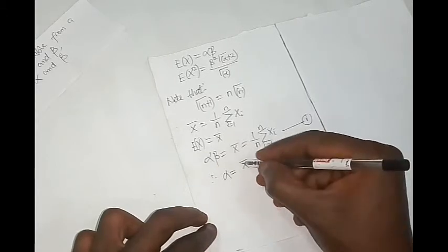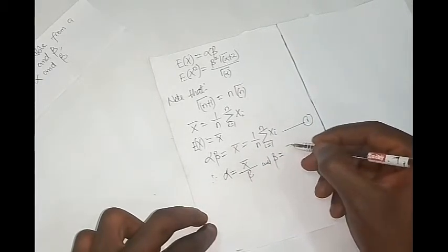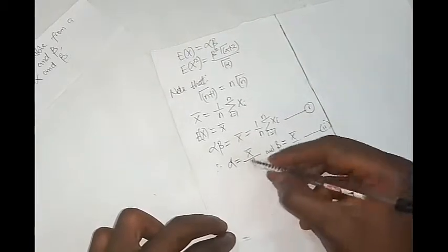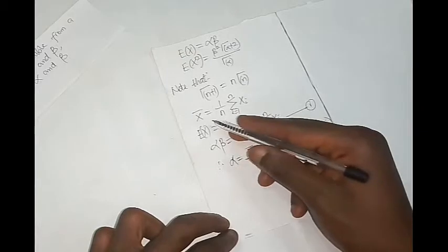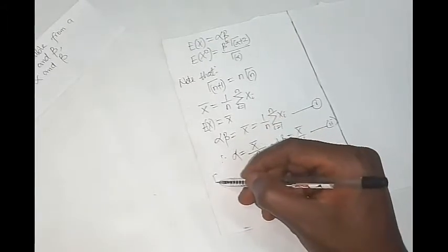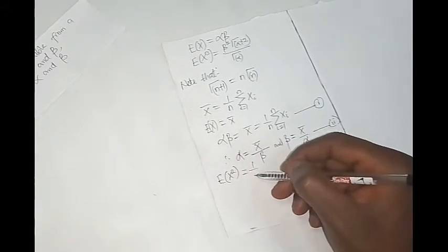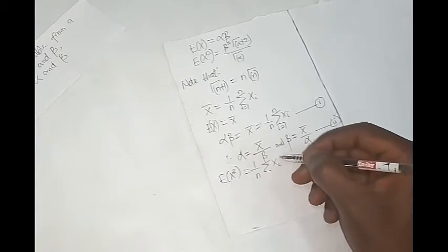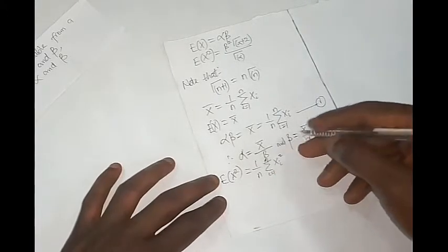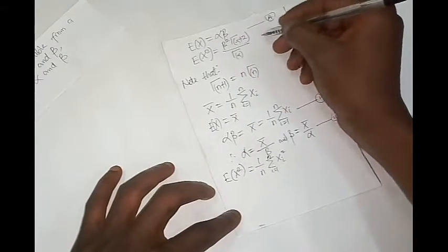Therefore, alpha equals the mean over beta, and beta equals the mean over alpha. Call this equation 2. Now for the expected value of x squared: the expected value of x squared will equal 1 over n times the summation of x_i squared from i equals 1 to n.